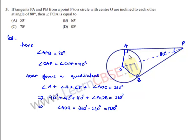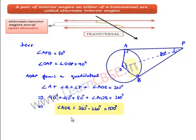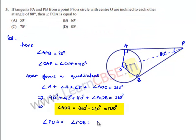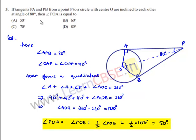Since PA and PB are tangents to the circle with center O, OP bisects angle AOB. Therefore, angle POA = angle POB = half of angle AOB = half of 100° = 50°. So angle POA = 50°. Option A is correct.